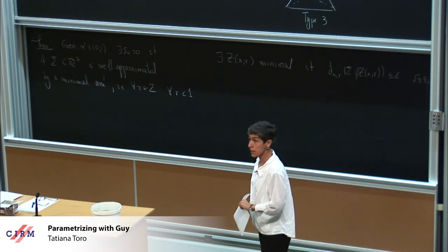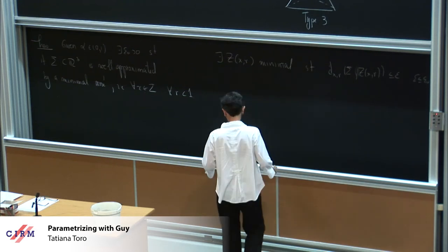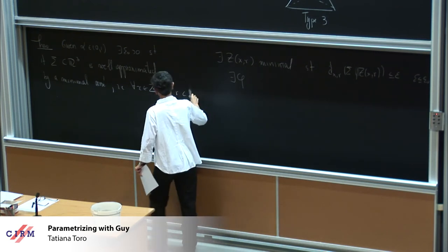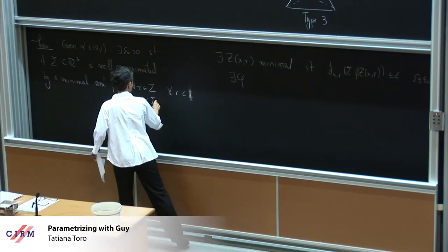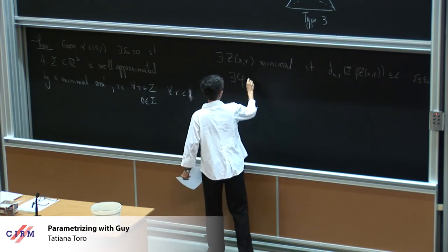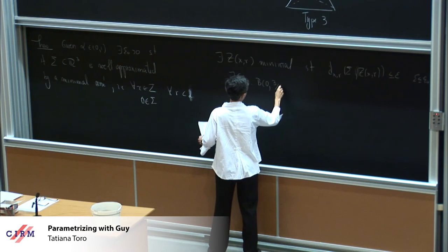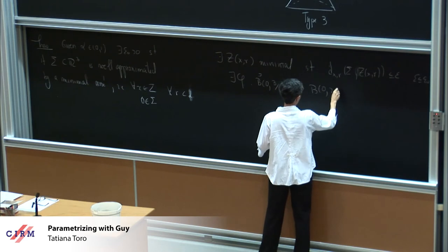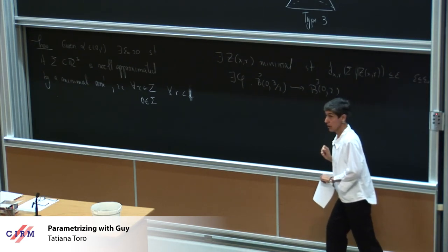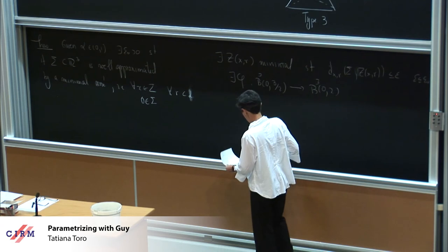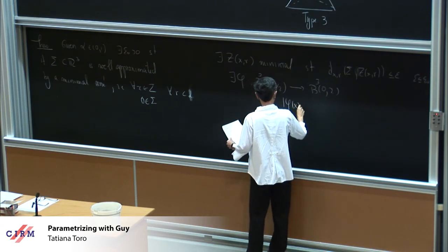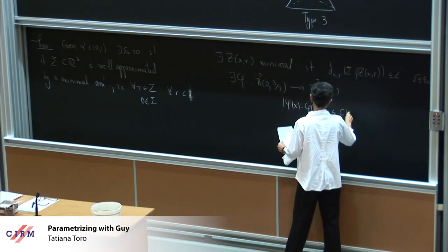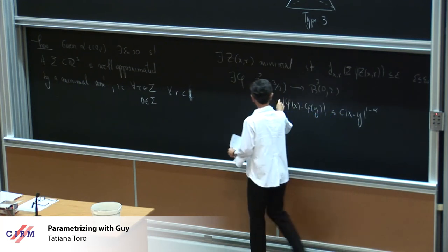Then, such that, d of x r of sigma, sorry, z of x r is less than epsilon for epsilon less than epsilon zero. So, that's what it means to be well approximated. Then, exactly the same, what you expect is. So, there exists a phi. Here, I'm going to have to put a two, sorry. Zero belongs to sigma. There exists a phi that goes from b, zero, three half. This is a three ball. Into b, zero, two. Another three ball. I will draw a picture in a minute of what I'm trying to say. Such that, phi of x minus phi of y is less than c, x minus y to the one minus alpha. See, please notice here the different exponent, one plus alpha.